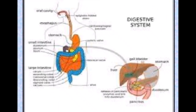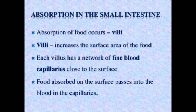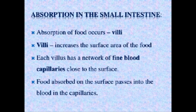Here is the structure of the digestive system. The last step of digestion takes place in the small intestine. Here food is mixed with digestive juices — bile juice and pancreatic juice. Bile juice is secreted from the liver and converts fats into fatty acids and glycerol. Pancreatic juice is secreted from the pancreas and converts starch into simple sugars and proteins into amino acids. So three digestive juices have been covered: HCL secreted in the stomach, bile juice from the liver, and pancreatic juice from the pancreas. Now digestion is complete.